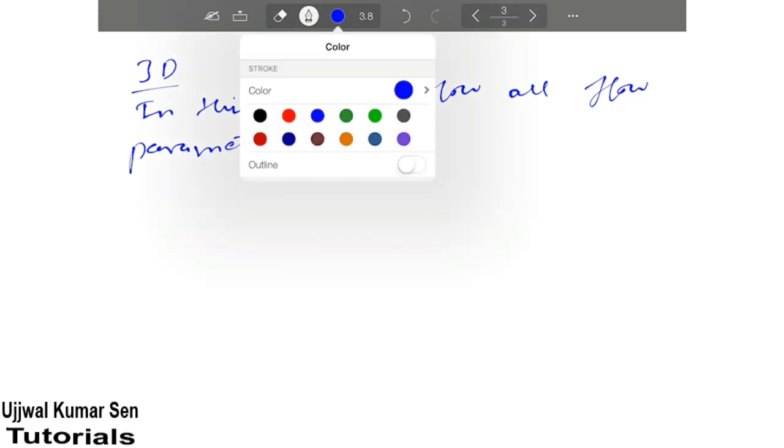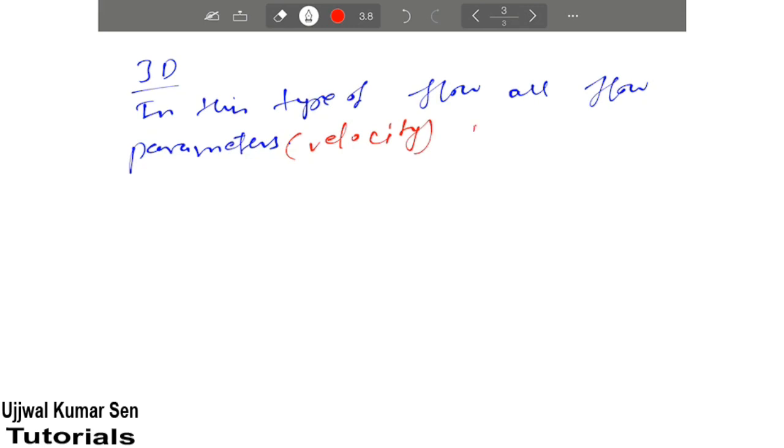what is the definition, how you can able to define 3D flows, right? So here we can say like this: in this type of flow all flow parameters, all flow parameters like velocity is an example of flow parameters are